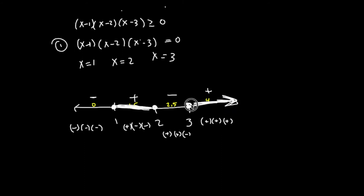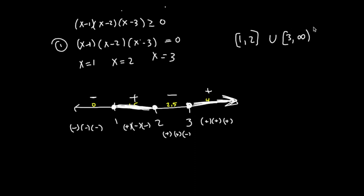Now I have the solution represented on a number line, and I want to write it in interval notation. From left to right: from 1 to 2, including both 1 and 2, and from 3 to infinity, including 3. In interval notation, [1, 2] ∪ [3, ∞) is the solution set — these are the values that make the left-hand side greater than or equal to 0.